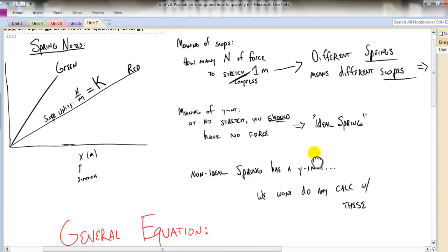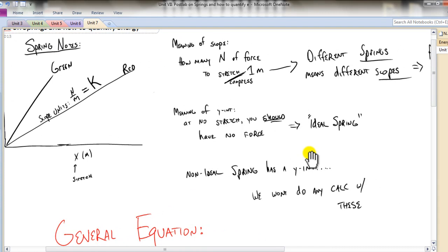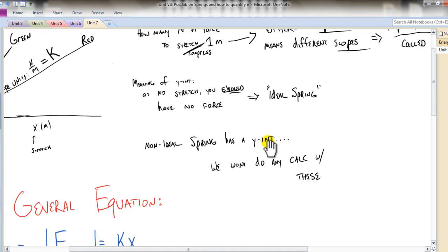Meaning of y-intercept - this should make sense. If you don't have any stretch, you shouldn't have any force, which would be called an ideal spring. However, there are cases where there are such things as a non-ideal spring.